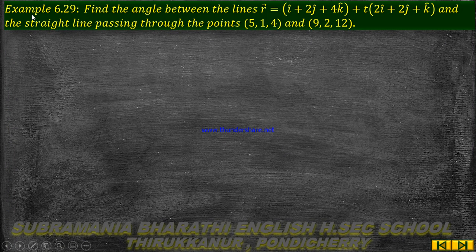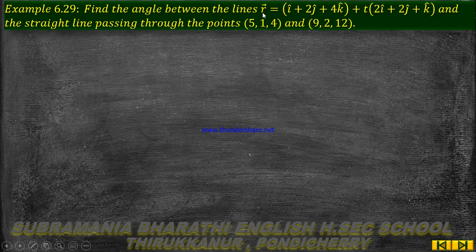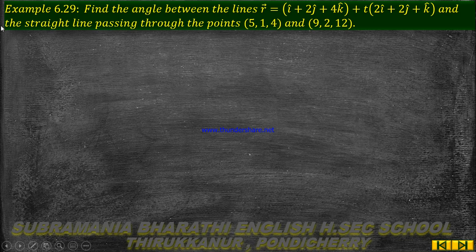Chapter 6, Example 6.29. Find the angle between the lines: r vector equal to i cap plus 2j cap plus 4k cap plus t into 2i cap plus 2j cap plus k cap, and the straight line passing through the points (5,1,4) and (9,2,12).